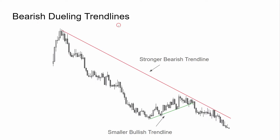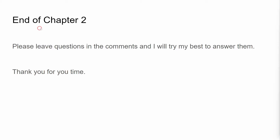Bearish dueling trend lines. Here is a strong bear trend line connected by three points — one, two, and three — and a smaller bullish trend line within the bearish trend line. There's more bearish momentum and we should avoid taking counter-trend trades. This gives the market a double top appearance, or a micro double top, and bears get their two legs down respecting the overall trend line. This is the end of chapter two. Please leave any questions in the comments and I'll try my best to answer them.